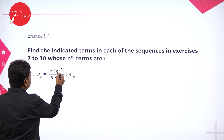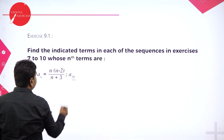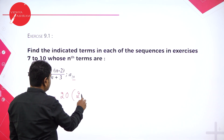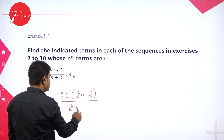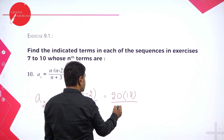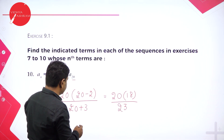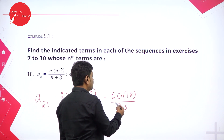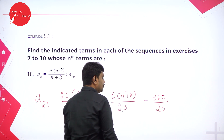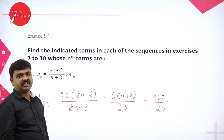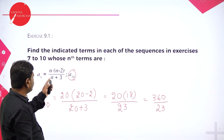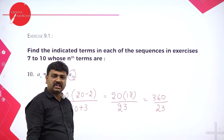Then Aₙ is given as N into (N minus 2) divided by (N plus 3). They want A20. In the formula, in the place of N put 20: 20 into (20 minus 2) divided by (20 plus 3). That is 20 into 18 divided by 23, which equals 360 divided by 23. The numerator 360 and denominator 23 are not divisible, so the answer is 360/23.